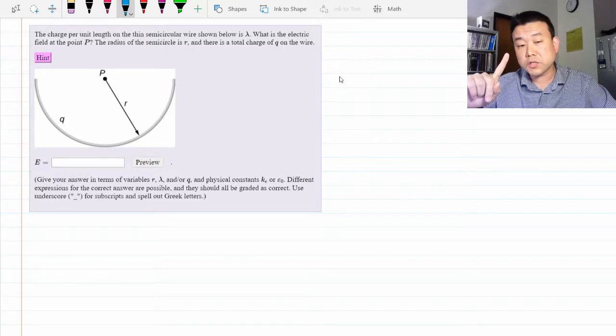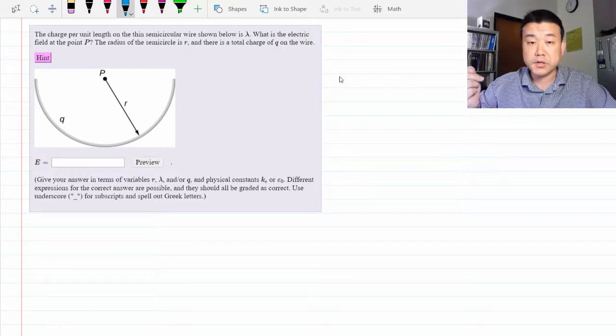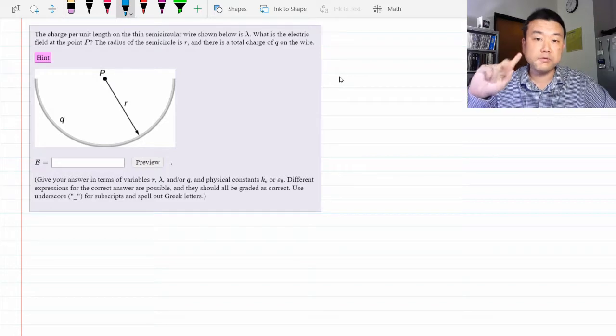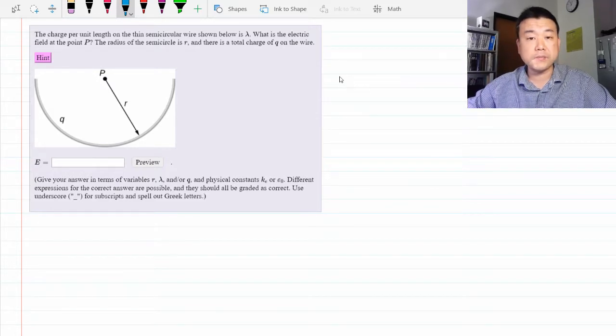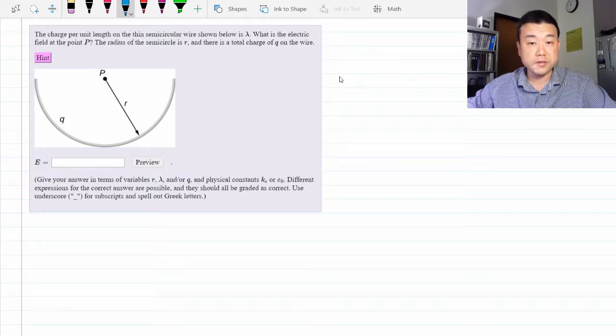One, some of the considerations you have to give in direct calculation of electric field. And two, this is an example where you can't calculate the electric field by using Gauss's law. There isn't enough symmetry in the setup.